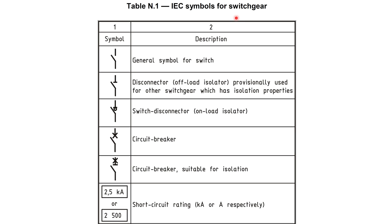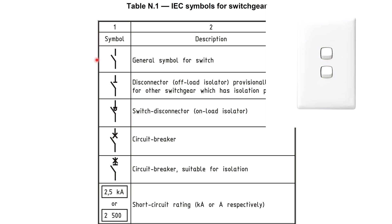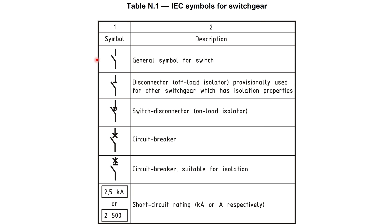Having a look at the IEC symbols for switchgear. Over here, the first one just shows a switch — this is a general symbol for a switch, which would be your light switch. You use your light switch to open and close the lighting circuit under normal conditions. Then we have a disconnector, but note that it says offload. So this means you can disconnect a part of a circuit, but when you do the disconnection, the power must be off and also the load must be discharged. Sometimes the load stores energy — we have to wait for that energy to be dissipated before we open that disconnector.